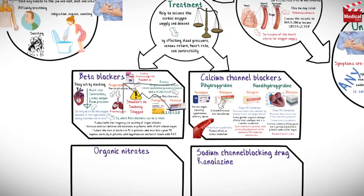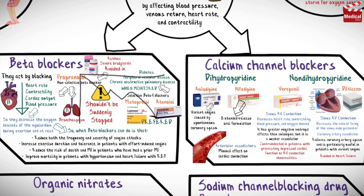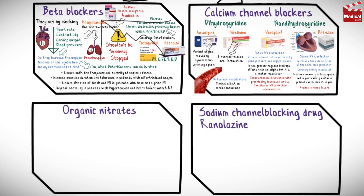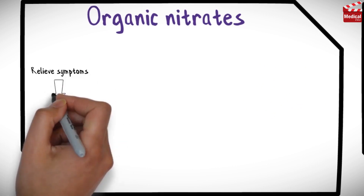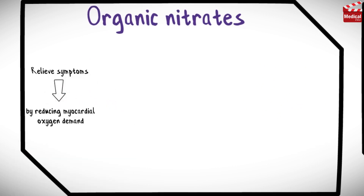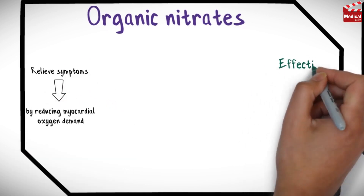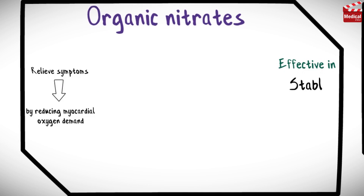In the previous lecture we started talking about angina medication and we talked about beta blockers and calcium channel blockers. In this lecture we'll talk about the other two types of medication, starting with organic nitrates. These drugs relieve symptoms by reducing myocardial oxygen demand and they are effective in stable, unstable, and variant angina.